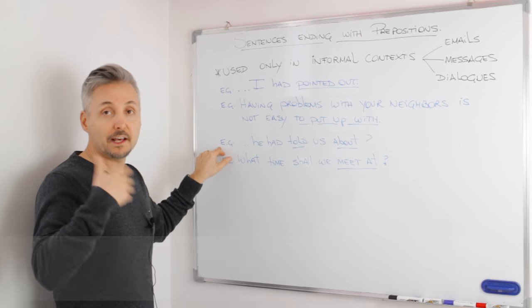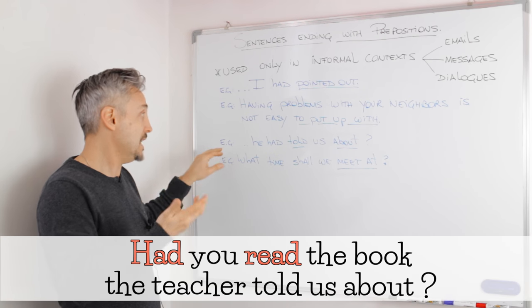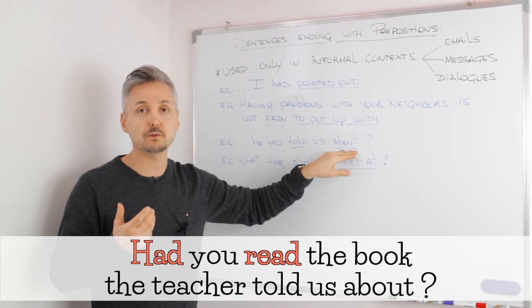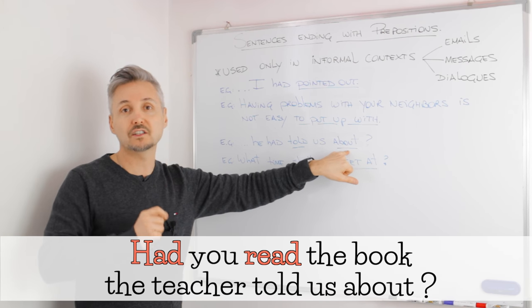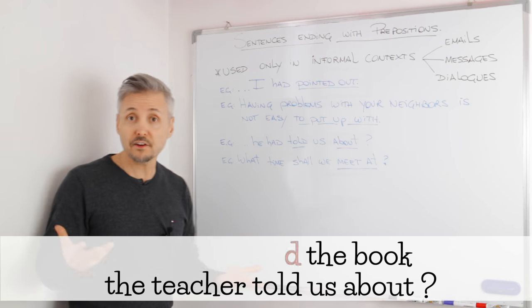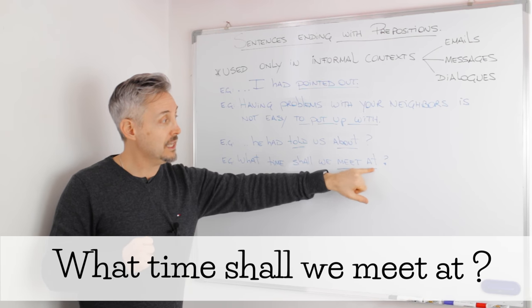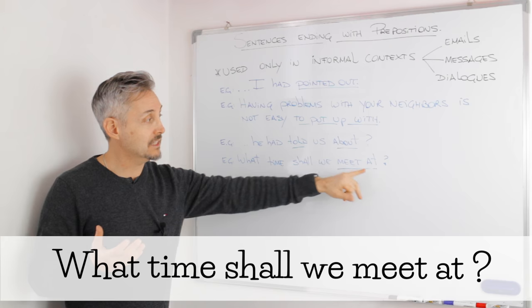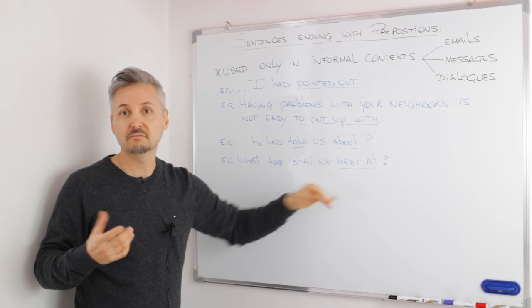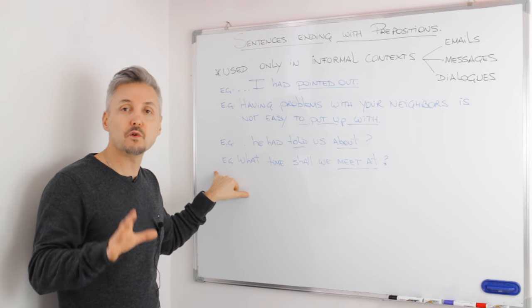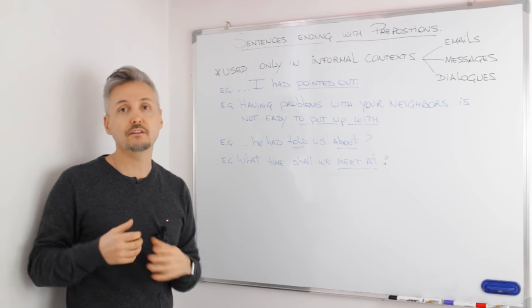So another example without a phrasal verb could be the example that I gave you at the beginning. He had told us about. To tell about is not a phrasal verb. And in this case, you can see about at the end of a question. Another example, what time shall we meet at? You can see that at is at the end of a question. So some people say, at what time shall we meet? At at the beginning of a sentence. That's more American. But some people prefer to use at at the end of a sentence. It's fine.